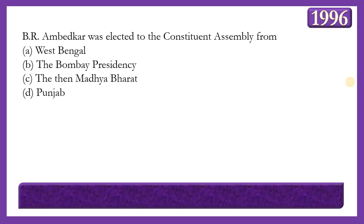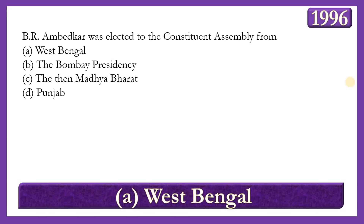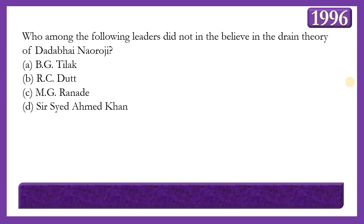Next question: B.R. Ambedkar was elected to the Constituent Assembly from which of the following? Options: West Bengal, the Bombay Presidency, Madhya Bharat, or Punjab. The answer is option A — West Bengal — though he was a resident of the Bombay Presidency, he was not elected from there but was elected from West Bengal.